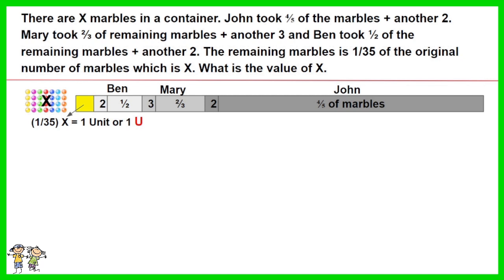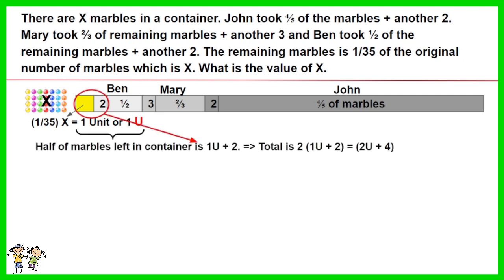Let's assume 1/35 of the marbles is one unit, or 1U. From the diagram you could see that half of the remaining marbles left for Ben is equal to 1U + 2. Thus, remaining marbles left for Ben are 2(1U + 2), which is equal to 2U + 4.